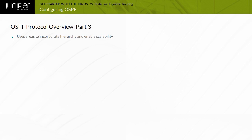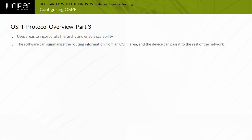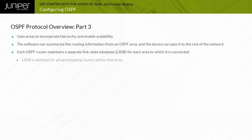OSPF uses areas to enable hierarchical organization and facilitate scalability. An OSPF area is a logical group of routers. The software can summarize routing information from an OSPF area and pass it to the rest of the network. Areas can reduce the size of the LSDB on individual routers. Each OSPF router maintains a separate LSDB for each area to which it is connected, and the LSDB for a given area is identical for all participating routers within that area.